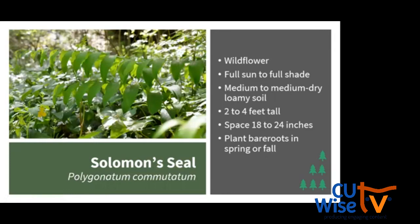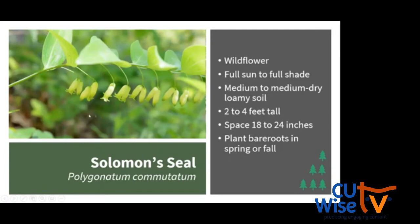Solomon's seal is a wildflower and taller ground cover that can grow in any light from full sun to full shade. It does well in medium or medium-dry soil, and while it prefers loam it can grow in poorer soil. It can grow up to 4 feet tall but I often see it around 2 feet tall, with arching stems. Its flowers dangle under the arched leaves — quite understated from the top. Plant bare roots in spring or fall. It spreads over time to form colonies, the flowers are replaced with berries in summer or fall, and the leaves turn a golden color in fall.